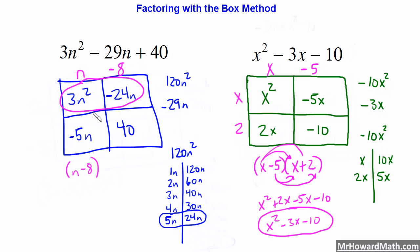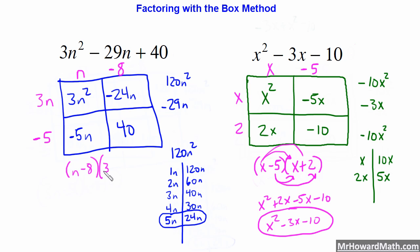For this row, 3 comes out of 3 and 24, and N comes out of N squared and N, giving us 3N. Signs matter here — we're going to have a negative because we have a negative in this box. We don't have an N term in the constant, so we can't pull out N — it's just negative 5. So we have our last factor: 3N minus 5. Our two factors are N minus 8 and 3N minus 5.